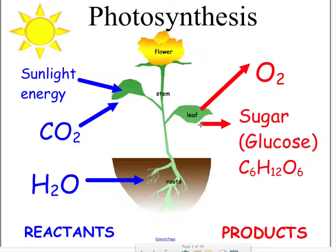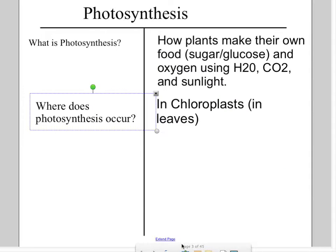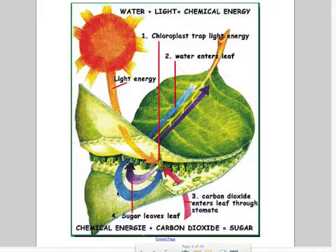Photosynthesis is how plants make their own food, also known as glucose or sugar, and also creates oxygen by using water, carbon dioxide, and sunlight. This whole process occurs in chloroplasts, and chloroplasts are found in the leaves.